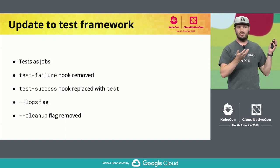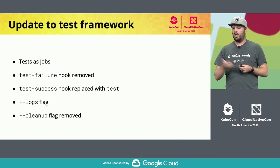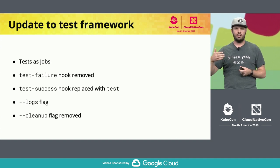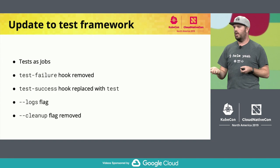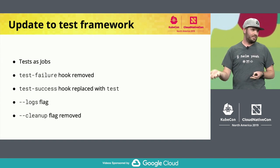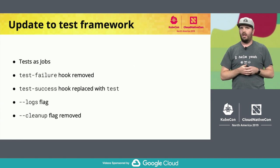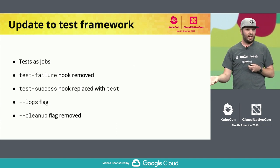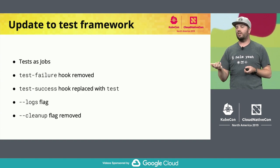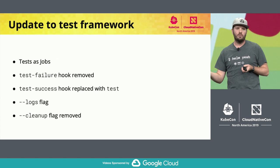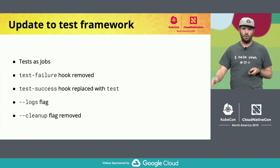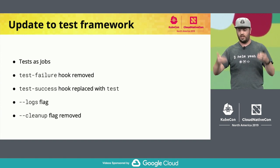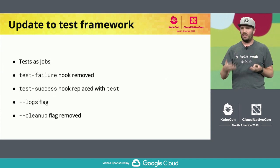We also have an update to the test framework. Instead of tests having to be bare pods, you can now use them as jobs. We also got rid of the difference between a test-failure and test-success hook — it's just 'test' now. We added the logs flag to stream logs back from test pods and removed the cleanup flag, but you can use the delete policy for hooks to delete those automatically. You can now run tests idempotently, so you won't run into named collision errors.